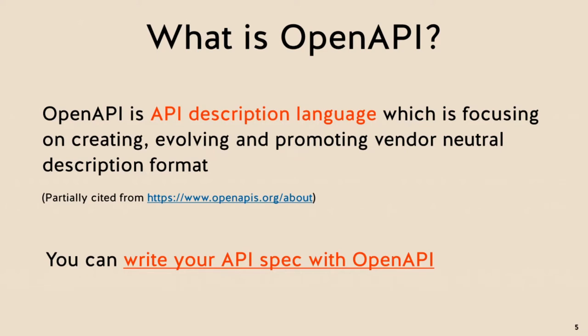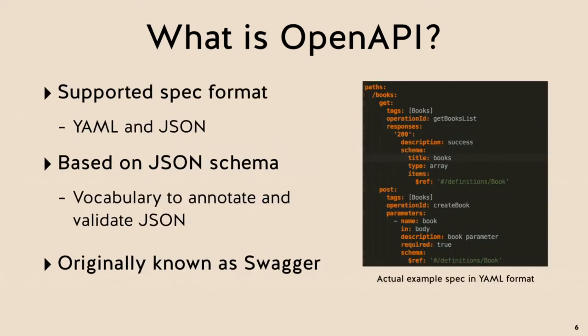For more detail, OpenAPI supports two types of format: YAML and JSON, and it's based on JSON Schema. JSON Schema is a vocabulary to annotate and validate JSON, and OpenAPI makes use of JSON Schema functionality.